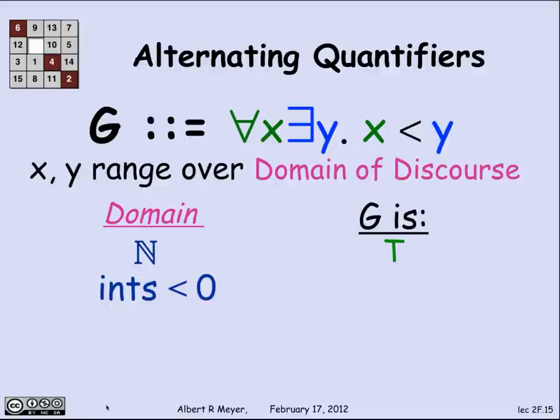On the other hand, when I change the domain of discourse, different things can happen. So let's look at the negative integers, the integers less than 0, and ask, is it true that for every x there's a y that's greater than x? Well, for a lot of them there is. If x is -3, then -2 is bigger than x. If x is -2, then -1 is bigger than x. But then I'm in trouble. If x is -1, there's no negative integer that's bigger than x. And so G is false when the domain of discourse is the negative integers.